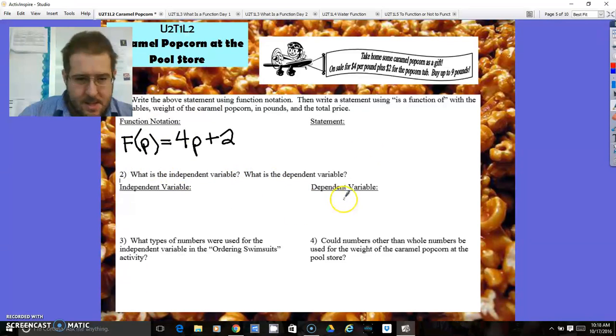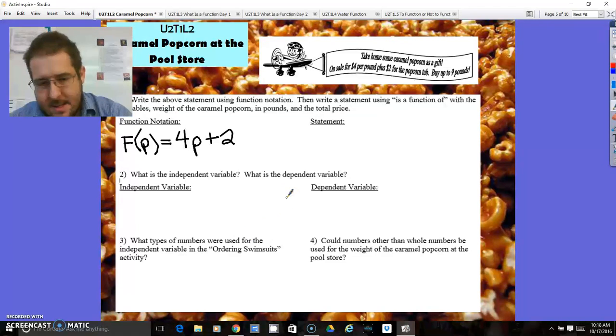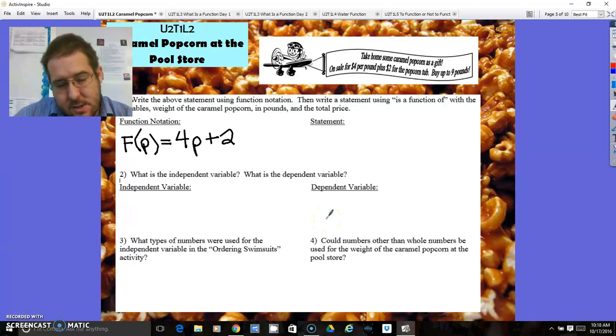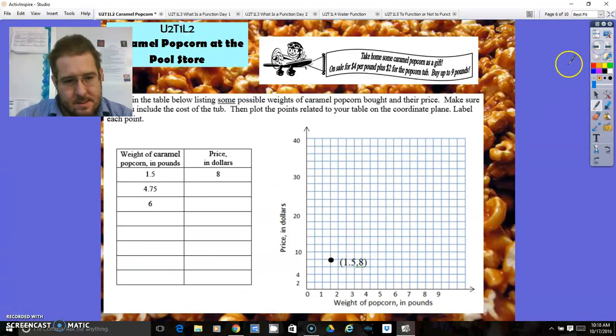What is the independent? The dependent was the total price, and the independent was the weight of the popcorn. What type of numbers are you using this? That would be whole numbers. They were all whole numbers in the last lesson because it was 0, 1, 2, 3, 4, 5. You can't buy 4½ swim shorts. But in this lesson, can you buy 4½ pounds of popcorn? Yes. That's the difference between this lesson and the last one. The last one was a discrete scenario. This one is continuous. So you could use non-whole numbers in this question.